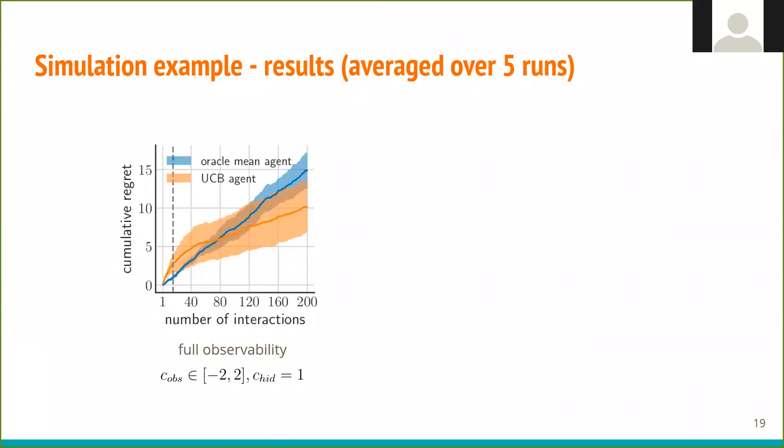In the full observability scenario, we can see that the UCB agent starts with lots of exploration, but very quickly finds the reasonable settings and overtakes Oracle mean agent.